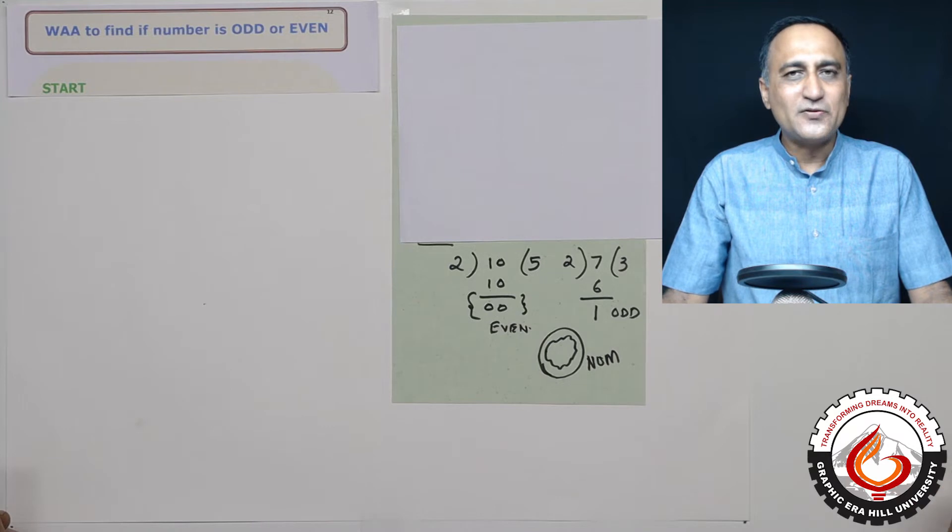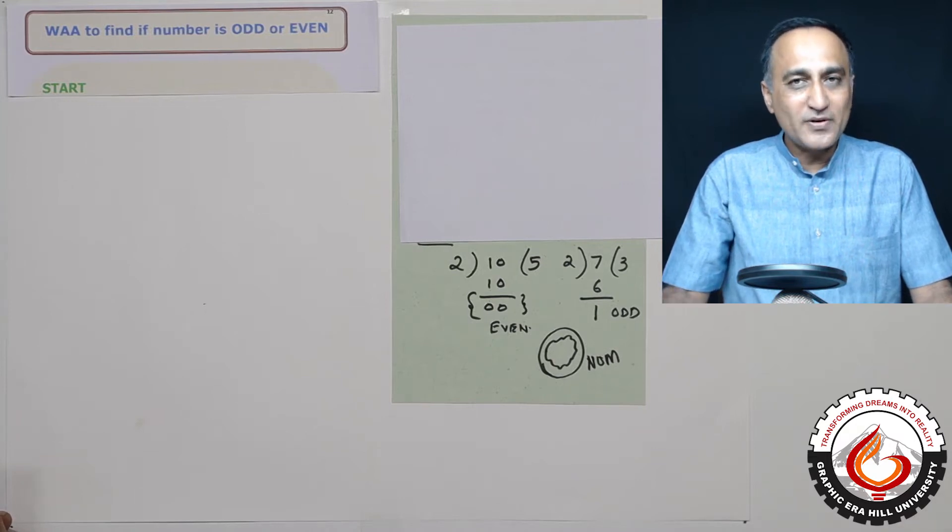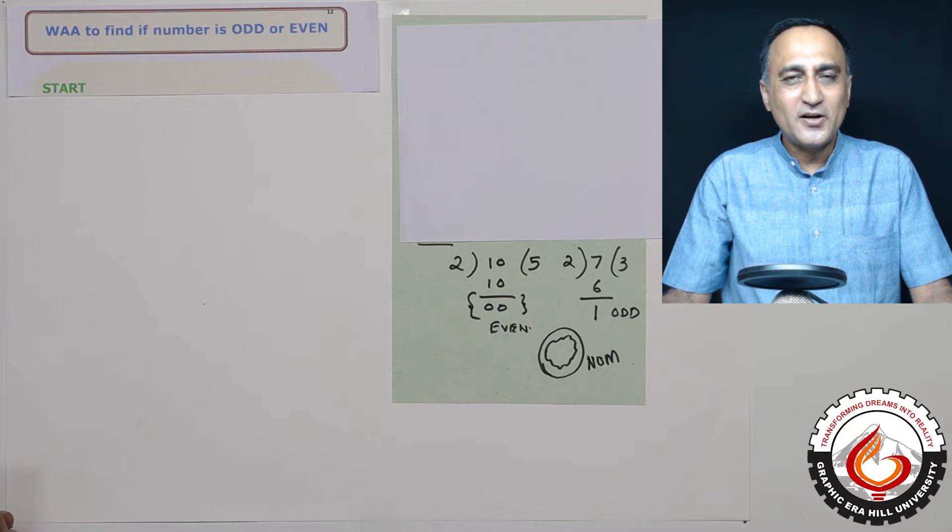All multiples of 2 happen to be even numbers and non-multiples of 2 happen to be odd numbers. So we will use this particular information to determine if an input number is odd or even.